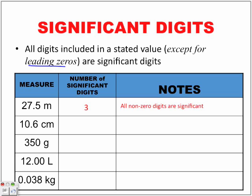Next example: 10.6. A common mistake is to say there are two significant digits — that's incorrect. In fact, this has three significant digits. The rule is: if a zero is between two other digits, then it is considered significant. Even though zeros are generally not considered significant, when they are found between two non-zero numbers they are significant. Here the two non-zero numbers are one and six, and the zero is between them, so it counts as a significant digit.